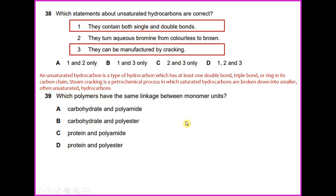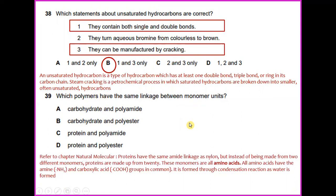Which polymers have the same linkage between monomer units? Refer to chapter on natural polymers. Proteins have the same amine linkage as nylon, but instead of being made from 2 different monomers, proteins are made up from 20. These monomers are all amino acids. All amino acids have the amine and carboxylic acid group in common. It is formed through condensation reaction as water is formed. So I would say that the answer for chapter 39 would be protein and polyamide.